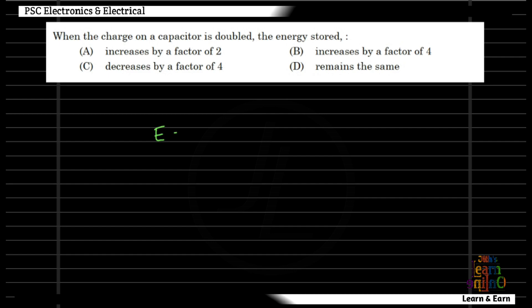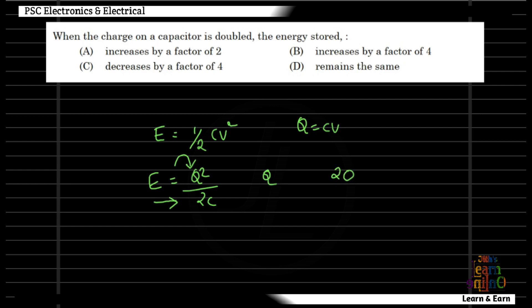The equation for energy stored is ½CV². Half CV² is the standard equation. Q is equal to CV. We have the equation Q²/2C. The equation of Q is direct. In this case, Q is the charge, W is the stored energy, and Q equals Q²/2C.